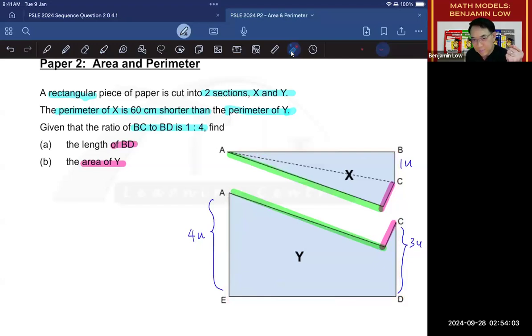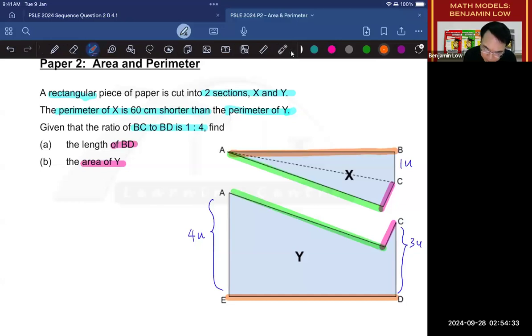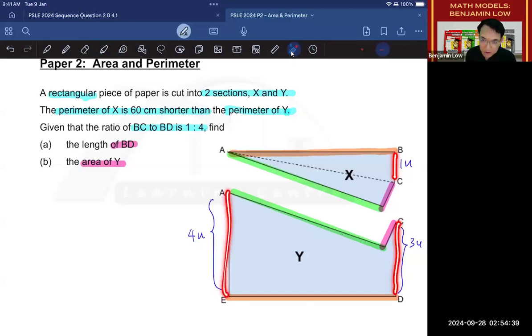But if you think further, do they share another common line? The answer is yes. The other common line that they share is the line over here. Here, this line is the equivalent of this line. They are equal to each other. So, what is left? Again, the difference between X and Y, if we were to eliminate all the common lines, will be this line compared to these two lines. In other words, the sum of these two lines is 60 more than this line.